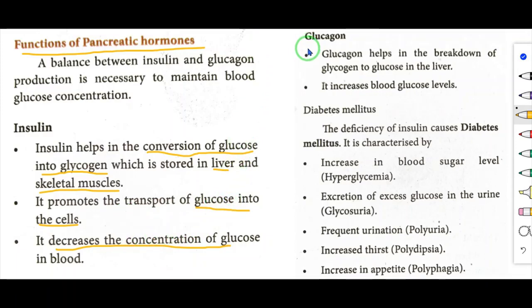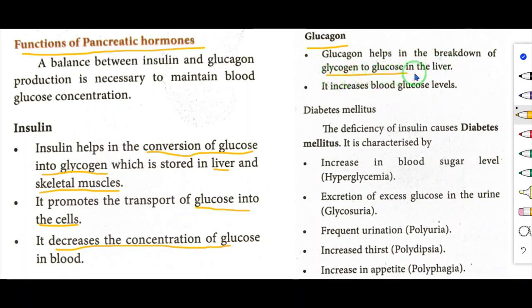The second hormone is glucagon. Glucagon helps in the breakdown of glycogen to glucose in the liver — just the opposite of insulin. It increases blood glucose level.